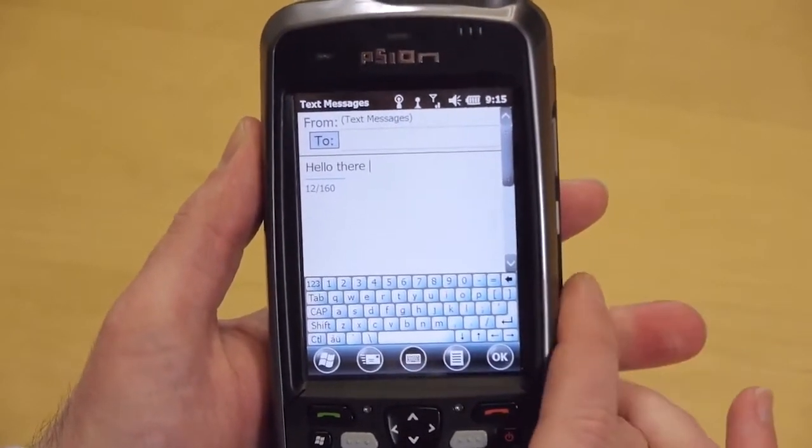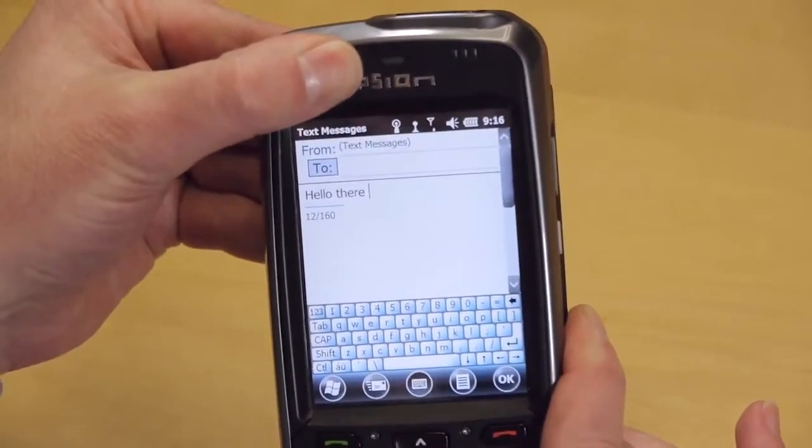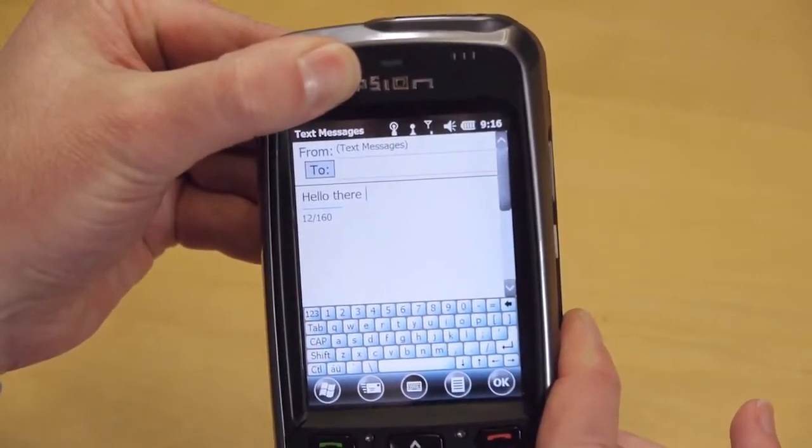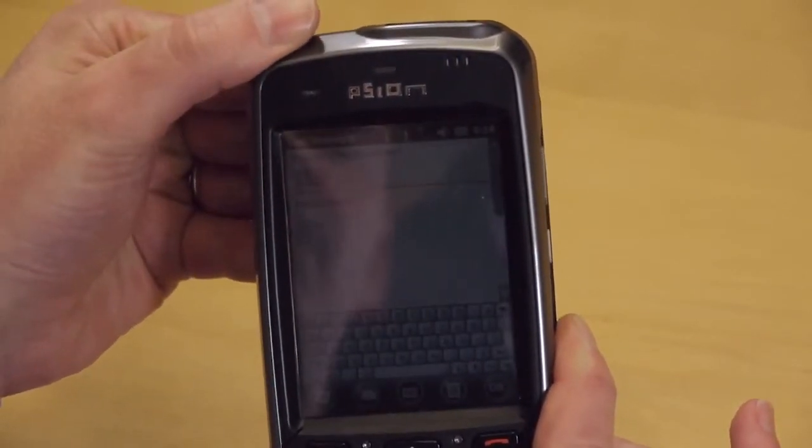Another feature is auto backlight adjustment. If I cover the sensor to simulate a dark room, the screen automatically goes dark. If I uncover it, the screen brightens up again.